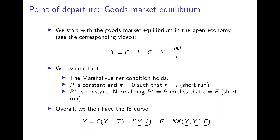The point of departure is the goods market equilibrium of the open economy. In a sense, income is equal to consumption plus investment plus government consumption plus exports minus imports divided by the real exchange rate, giving us net exports. We assume that the Marshall-Lerner condition holds, which means that if there is a real depreciation, net exports rise.